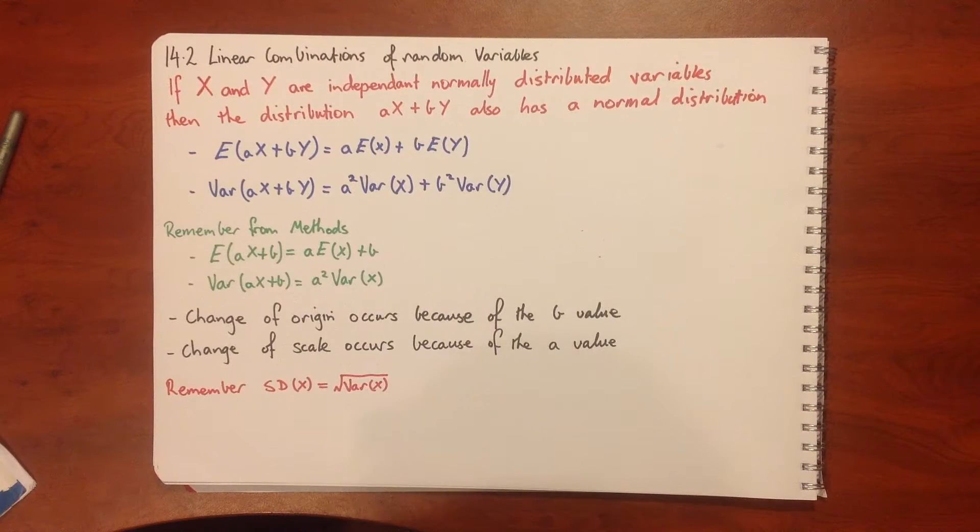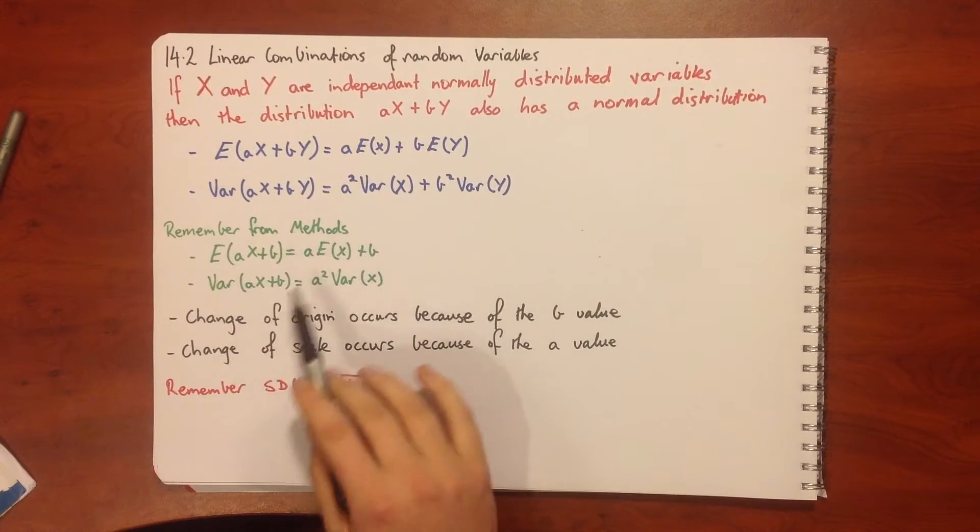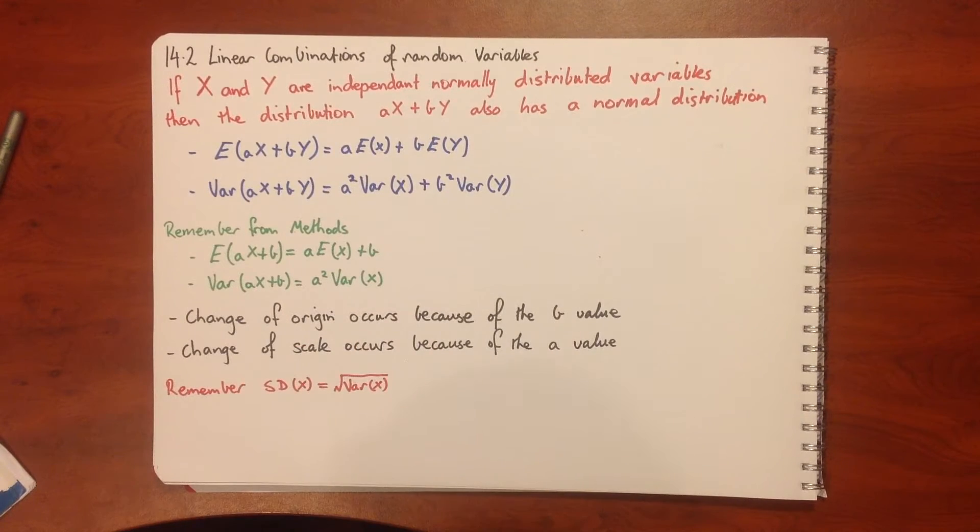Some of the terminology: a change of origin occurs because of the b value. The b value is our translation, which means our origin changes around.